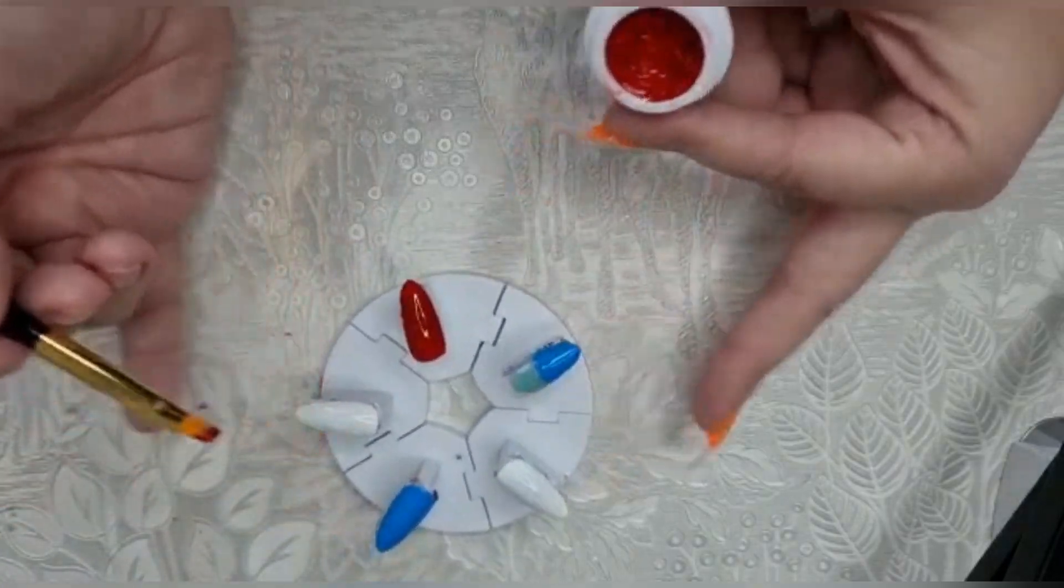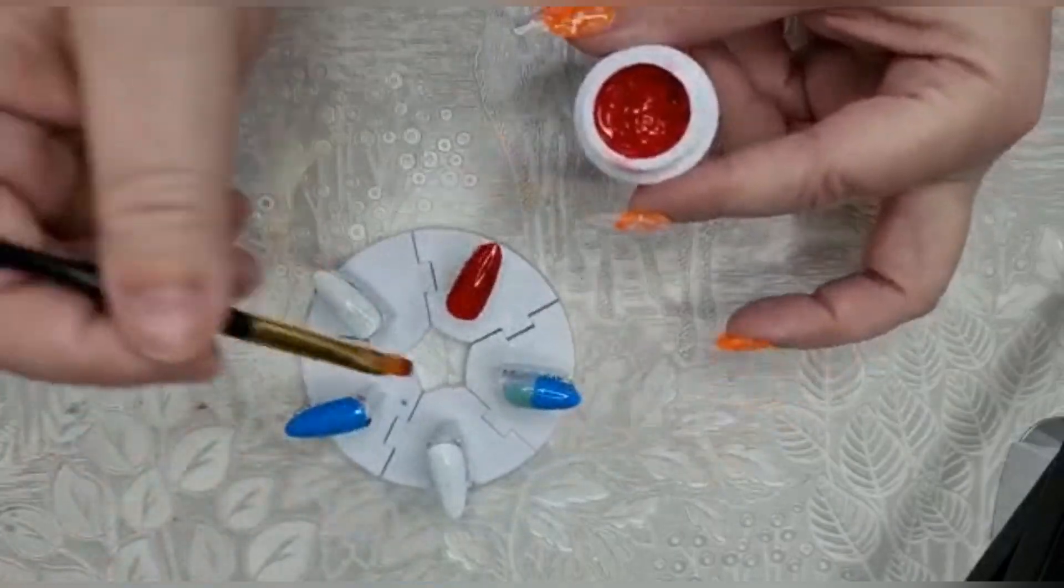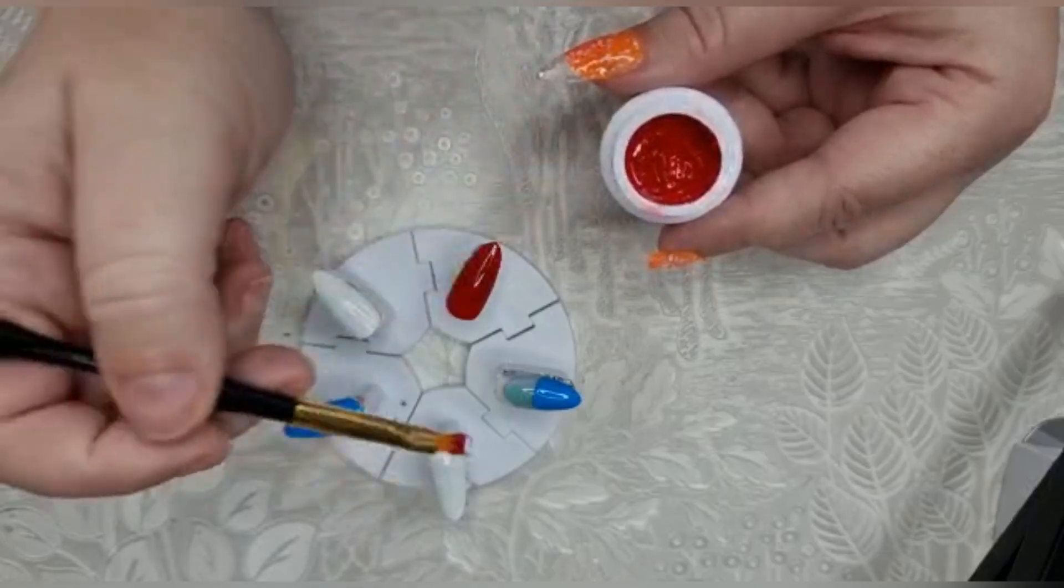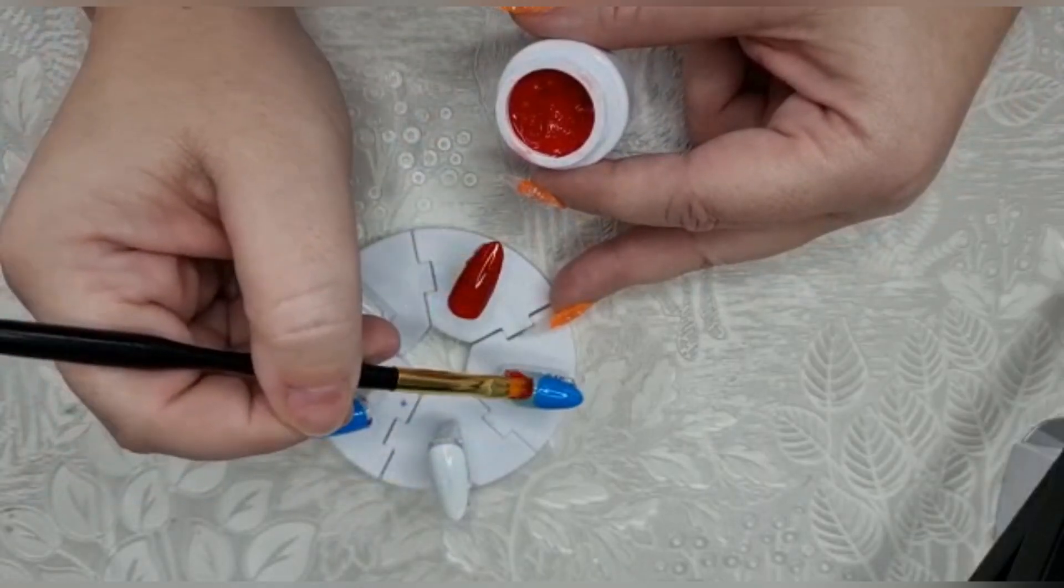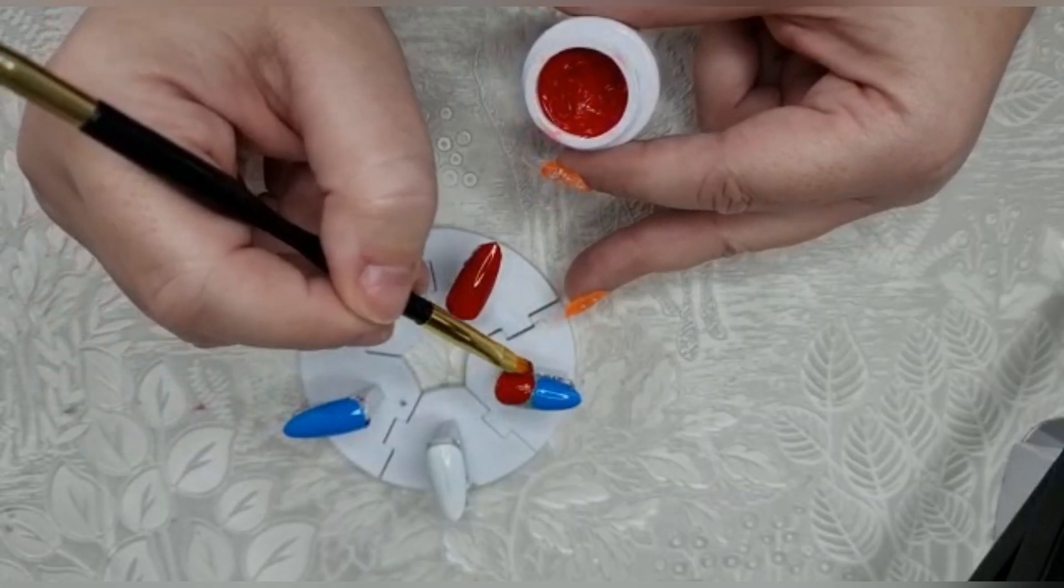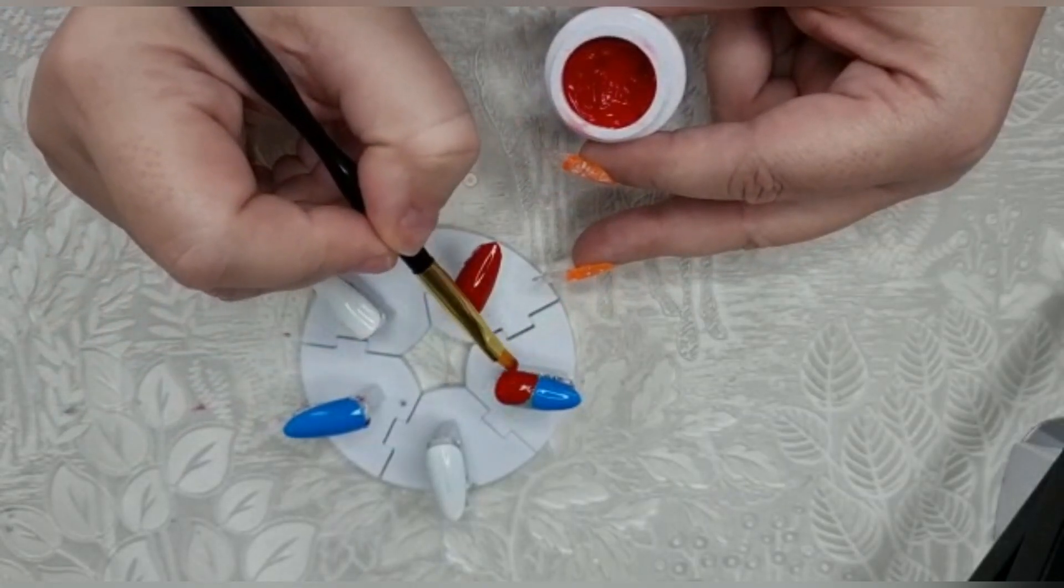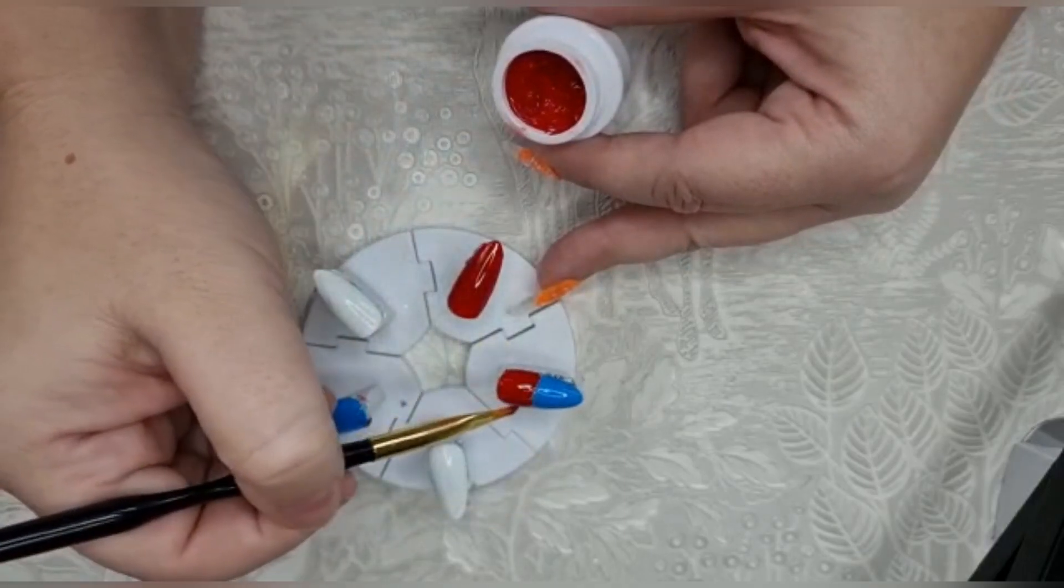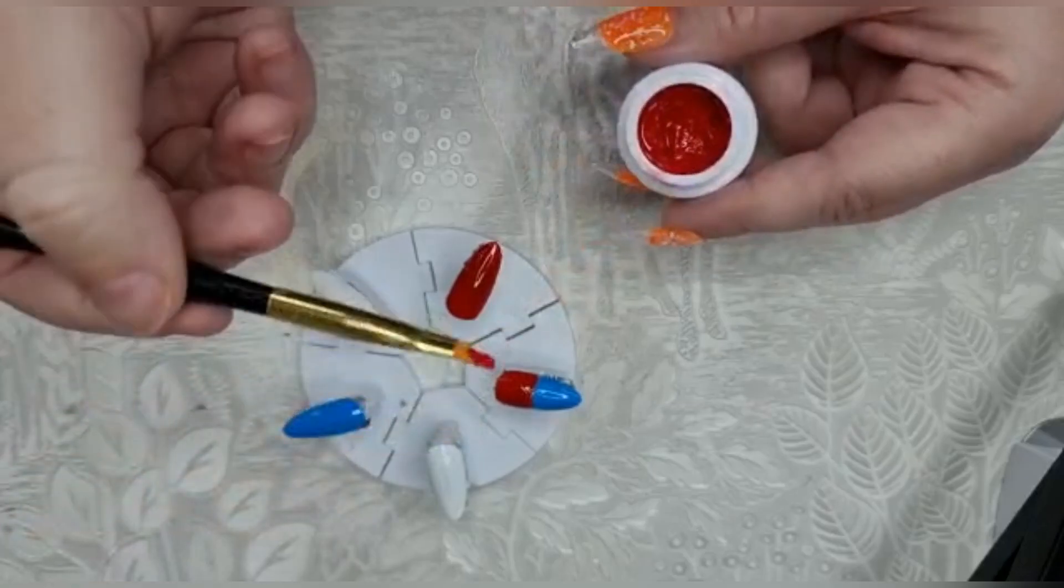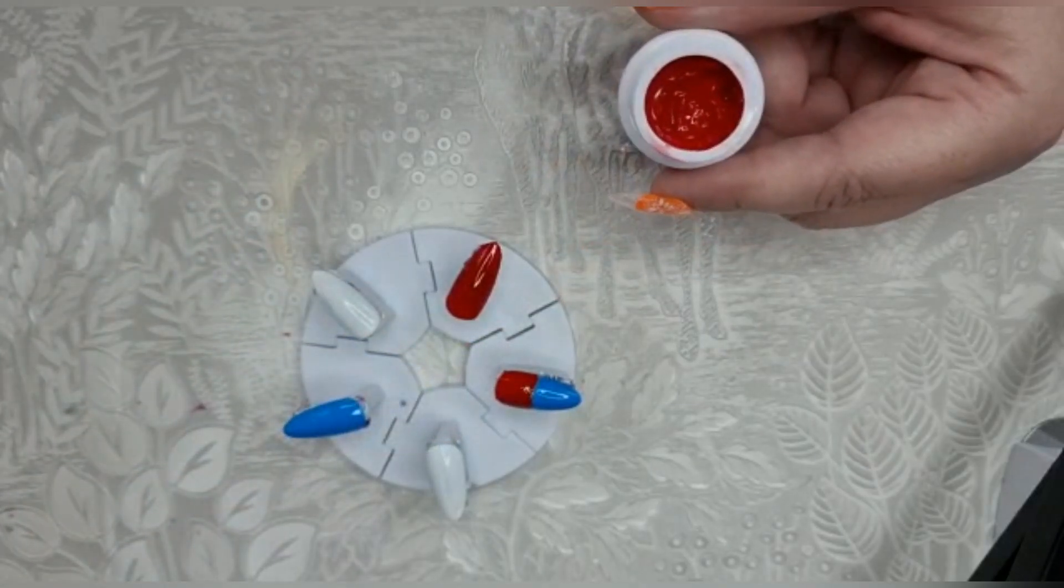There we go, that's nice and self-leveling. Now I'm going to do red up here and try and blend them together just ever so slightly. I've only ever done blending with an ombre brush with polish. I've never done it with the solids, so I don't know how well this is going to go.